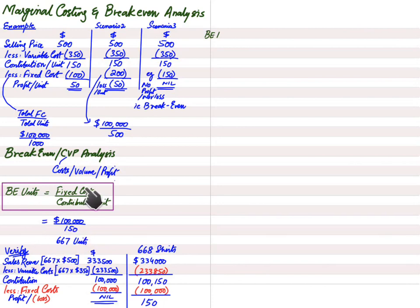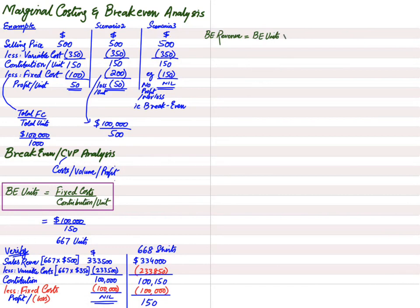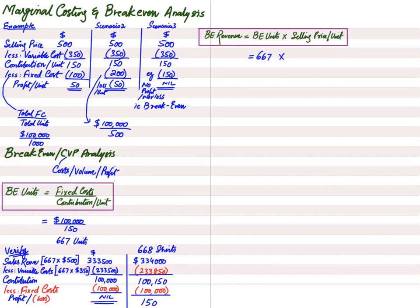Now, if the examiner asks for break-even revenue rather than units, the easy formula is: Break-Even Units × Selling Price per Unit. We already calculated 667 shirts, multiplied by $500, gives break-even revenue of $333,500.